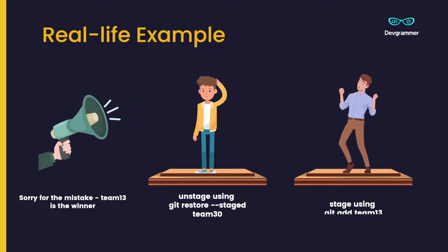But here is one catch — the real winners are team number 13. There was a mistake from the announcers. They correct it by saying sorry, team 13 is the actual winner. So our first task is to unstage the wrongly announced winners, team 30. Git restore with the --staged flag followed by the file name — git restore --staged team30 — will do this. Then our final task is to bring the real winners on stage with git add team13.